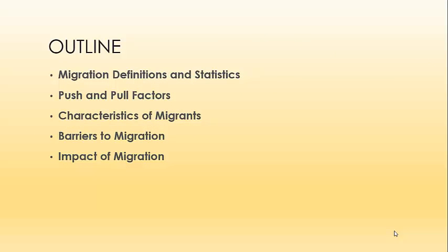In this lesson we will be doing a general overview of some of the issues surrounding migration. We will start by establishing some definitions for basic terms and looking at some metrics for analyzing migration. Second, we will examine some of the causes of migration by looking at push and pull factors. Third, we will explore some general characteristics of migrants. Fourth, we will look at some potential barriers to migration. And finally, we will try to understand the long-term impacts of migration on a particular place.